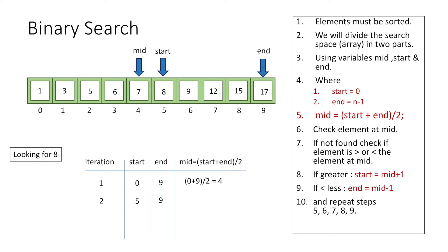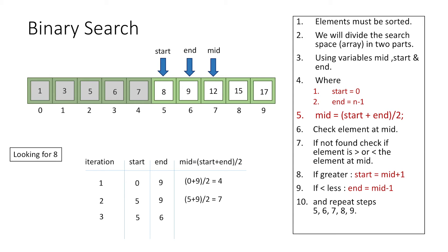Calculating the new mid: (5 + 9) / 2 = 7, so mid is now index 7. The value at index 7 is 12, which is not 8, and since 8 is less than 12, we set end = mid - 1 = 6. Search space is halved again. The new mid is (5 + 6) / 2 = 5, so mid is now index 5, and the value at index 5 is 8 — the element we were looking for.